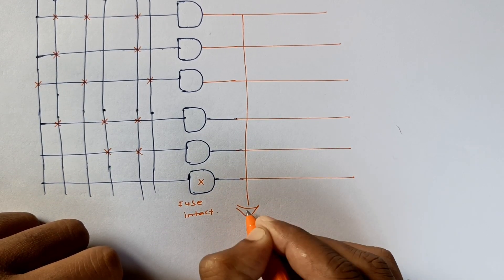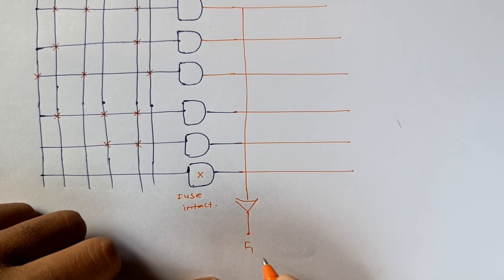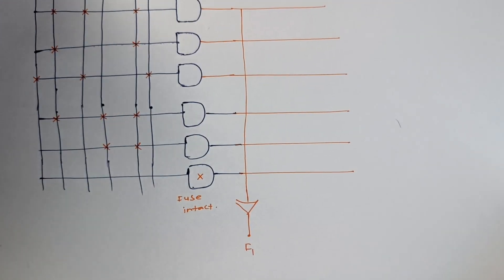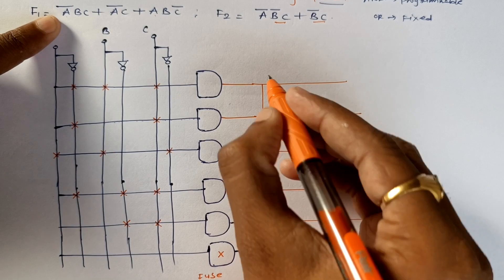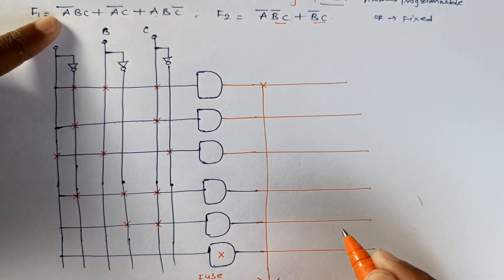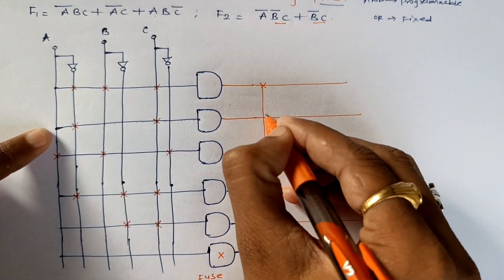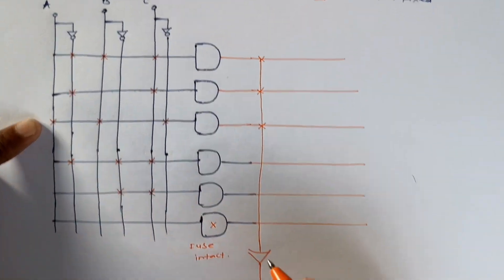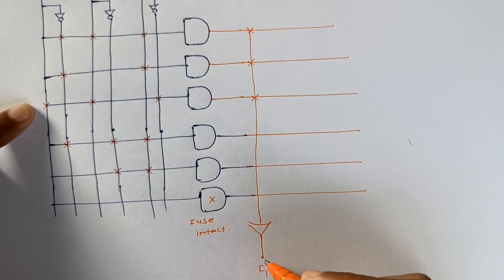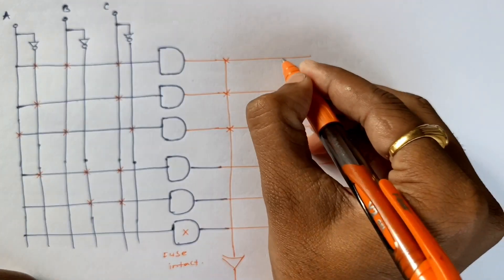We will mark this as F1. Now F1, to which we will add. First product here is A bar B C, this one. Second here is A bar C, this one. Third is ABC bar, this one. So in this one we will get F1.